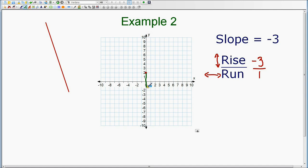Negative 1 is not labeled on this graph, so I'm going to stop midway between the 0 and negative 2.